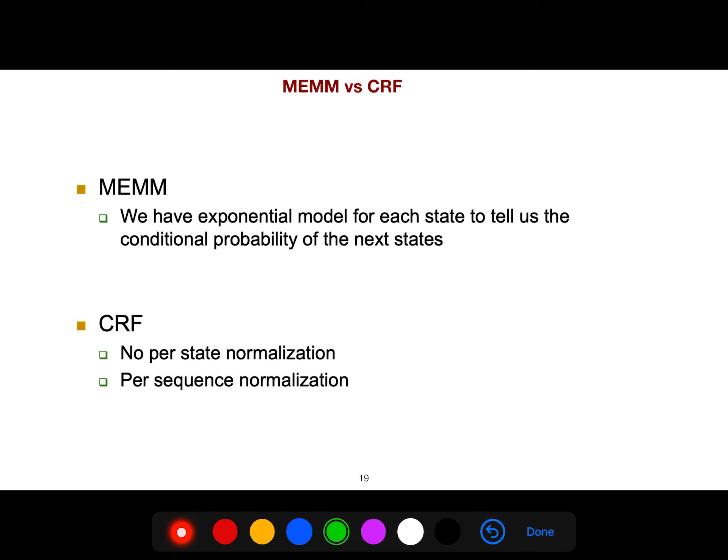And let's compare it with conditional random fields. So I have a playlist for conditional random fields. MEMM, we have exponential model for each state to tell us the conditional probability of the next state. But CRF, there is no per-state normalization, so it's easier. There is per-sequence normalization, so we still have normalization problem.